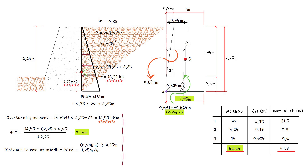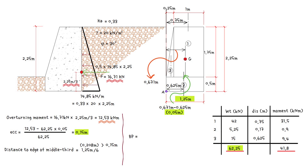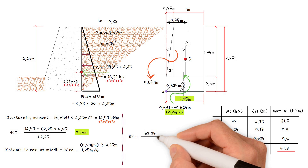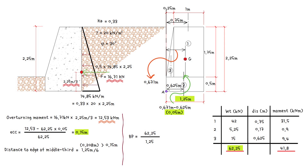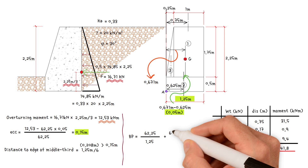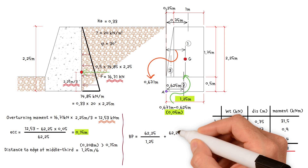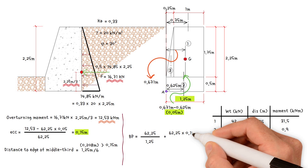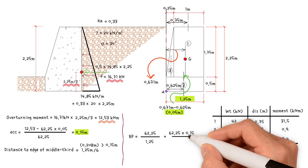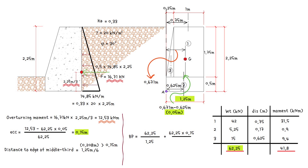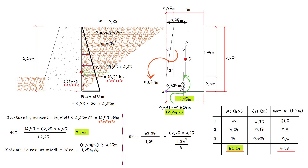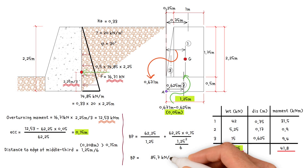Therefore, the maximum bearing pressure equals total vertical weight 62.25 kilonewtons divided by 1.25 meters, plus total weight 62.25 kilonewtons times the eccentricity 0.15 meters, divided by the elastic section modulus which is 1.25 squared divided by 6. This gives a value of 85.7 kilonewtons per square meter.